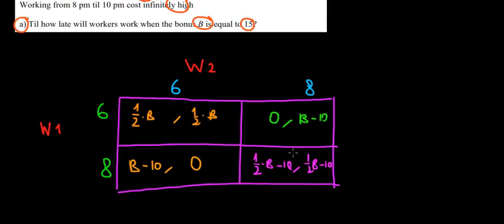With this in mind, let's put some numbers. We're dealing with the case where the bonus is equal to 15. We're going to substitute 15 into the bonus to see the actual numbers. Then we can just play the game theory as we know. What do we have? 1 over 2 times 15, that's 7.5 and 7.5 over here as well.